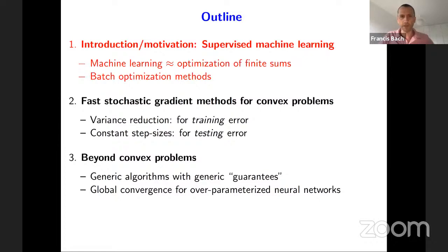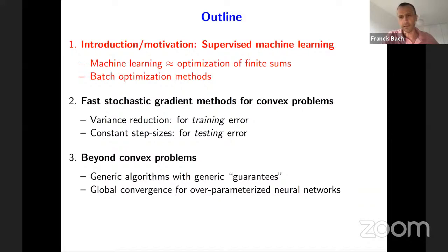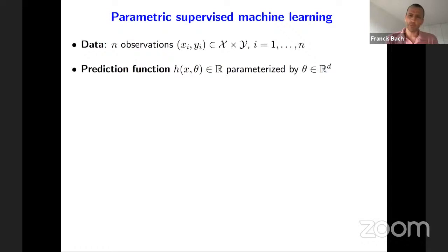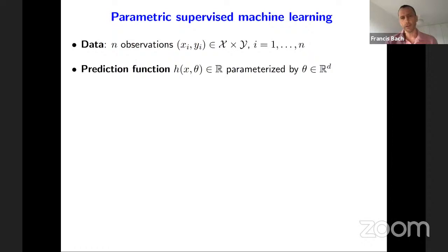In terms of questions, I may pause at appropriate points to allow questions. You can put them in the chat and I will try to look at them and answer. So let's start. I'm going to consider parametric supervised machine learning with observations (x_i, y_i) — x_i can be an image, y_i can be a label. We observe n such pairs, typically n quite large, and the goal is to predict a new y given a new x through some prediction function h(x; θ), where θ is your parameter in R^d.